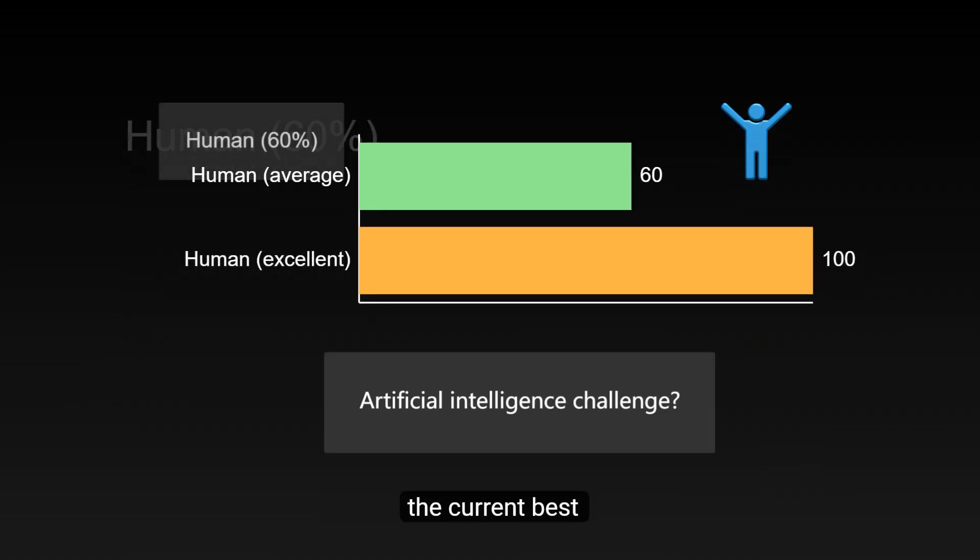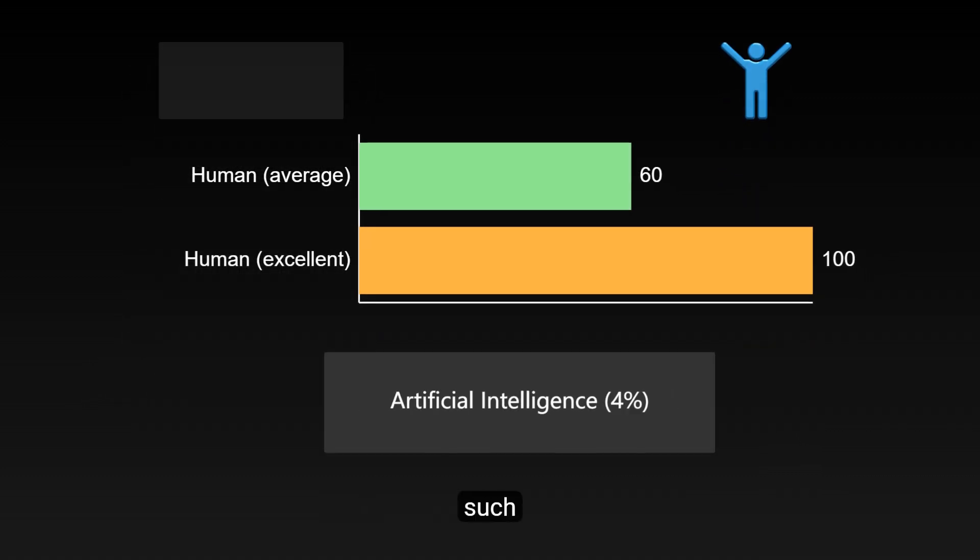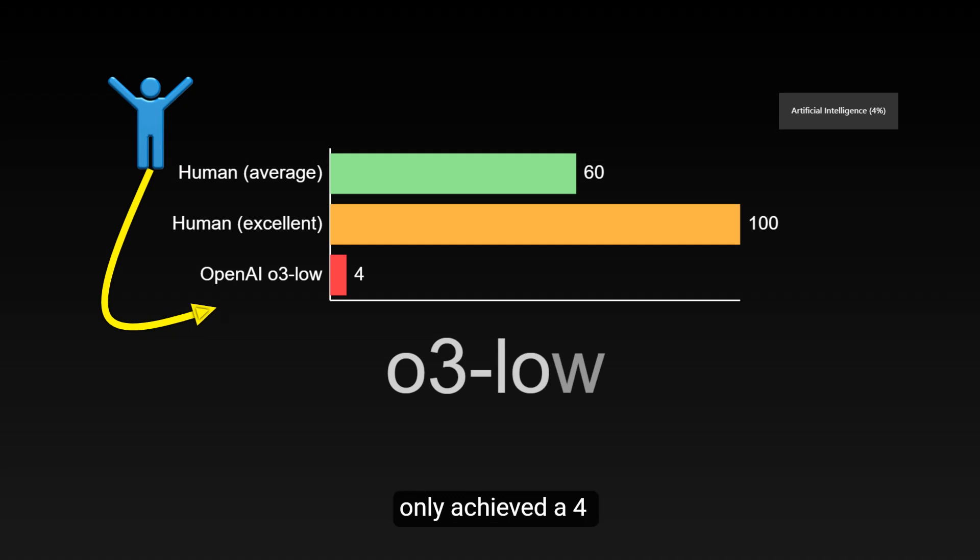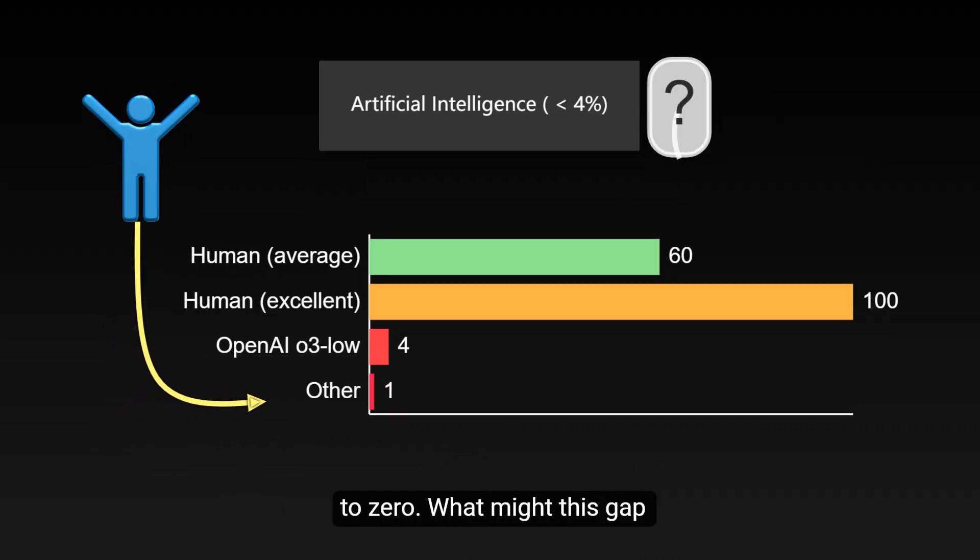In comparison, the current best-performing AI systems, such as OpenAI's O3 Low, only achieved a 4% pass rate, while other AI systems scored close to zero.